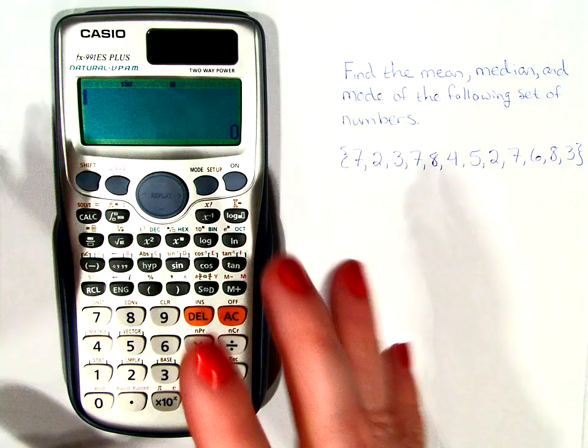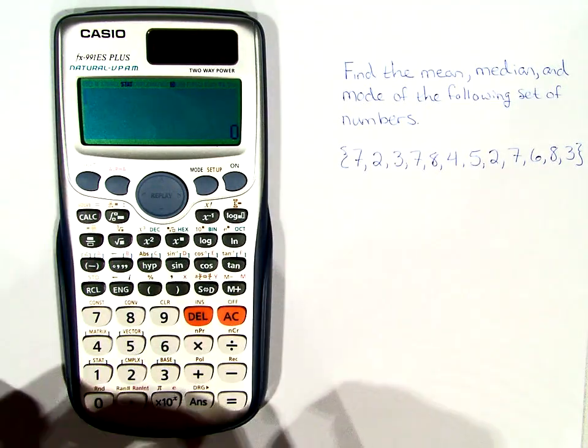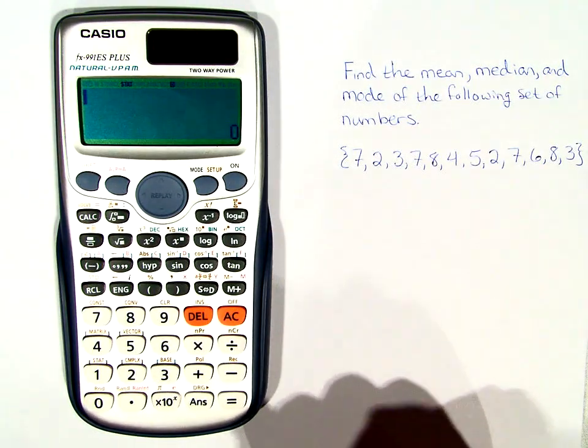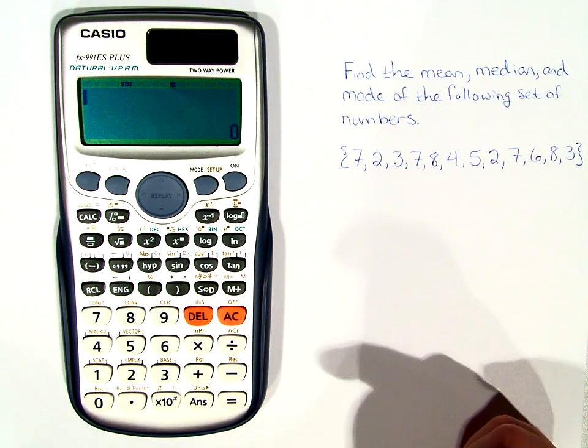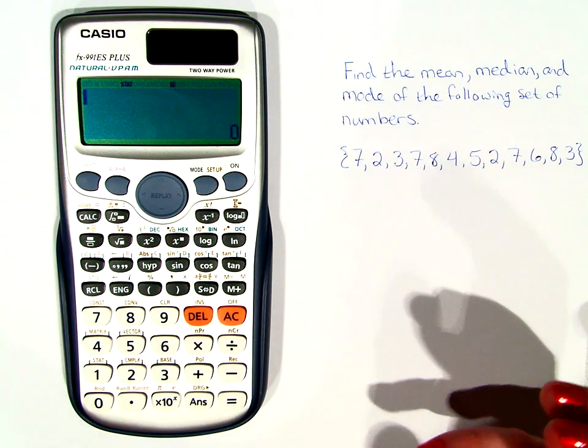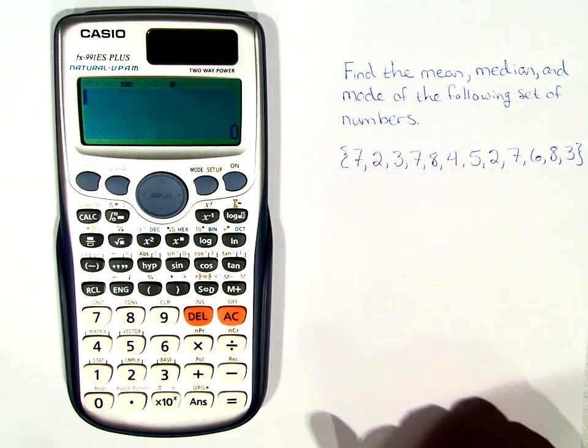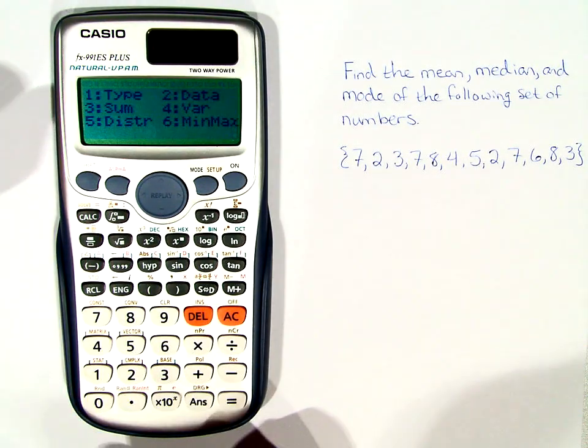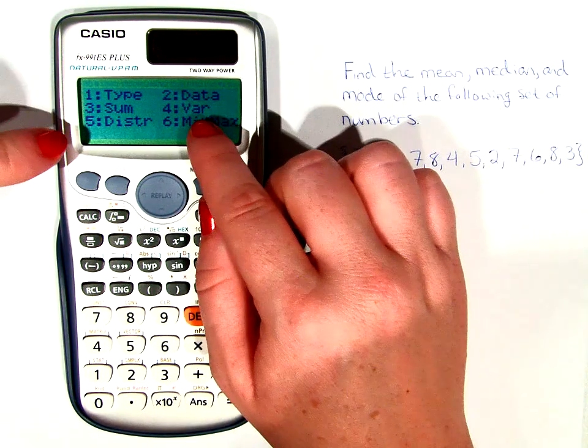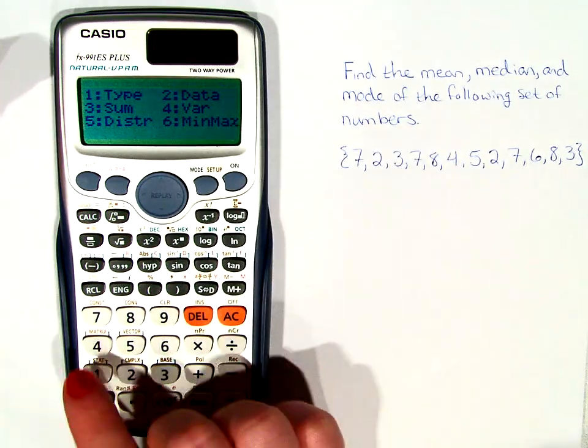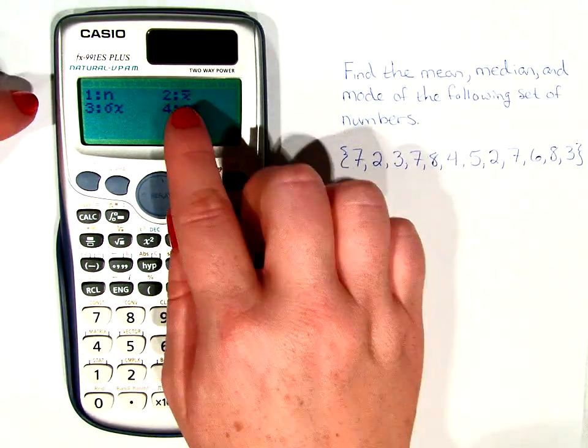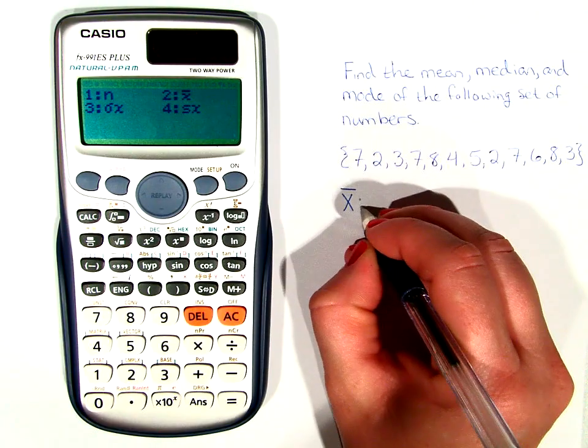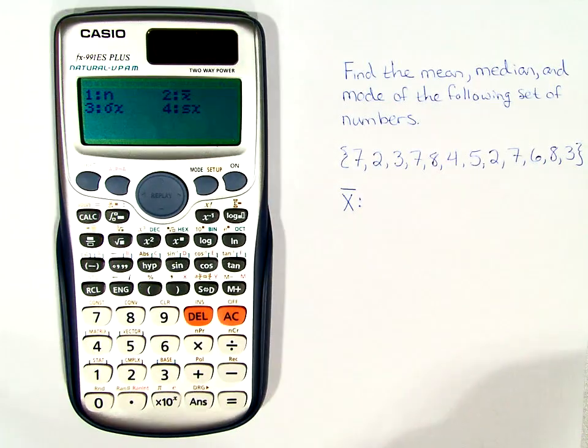The calculator has our data, and we want it to find what we're looking for, the mean. Now the calculator has symbols for many of these calculations rather than writing out the full word. So once again, we're going to hit Shift-1. But instead of putting in data, we're going to look at variations, 4. This symbol right here, X bar, is the same thing as mean. So we're going to hit 2.